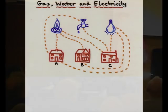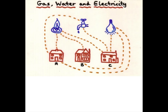You have three neighbours who hate each other: Mr. Angry, Mr. Beastly, and Mr. Cross. And they want to be linked to gas, water, and electricity.